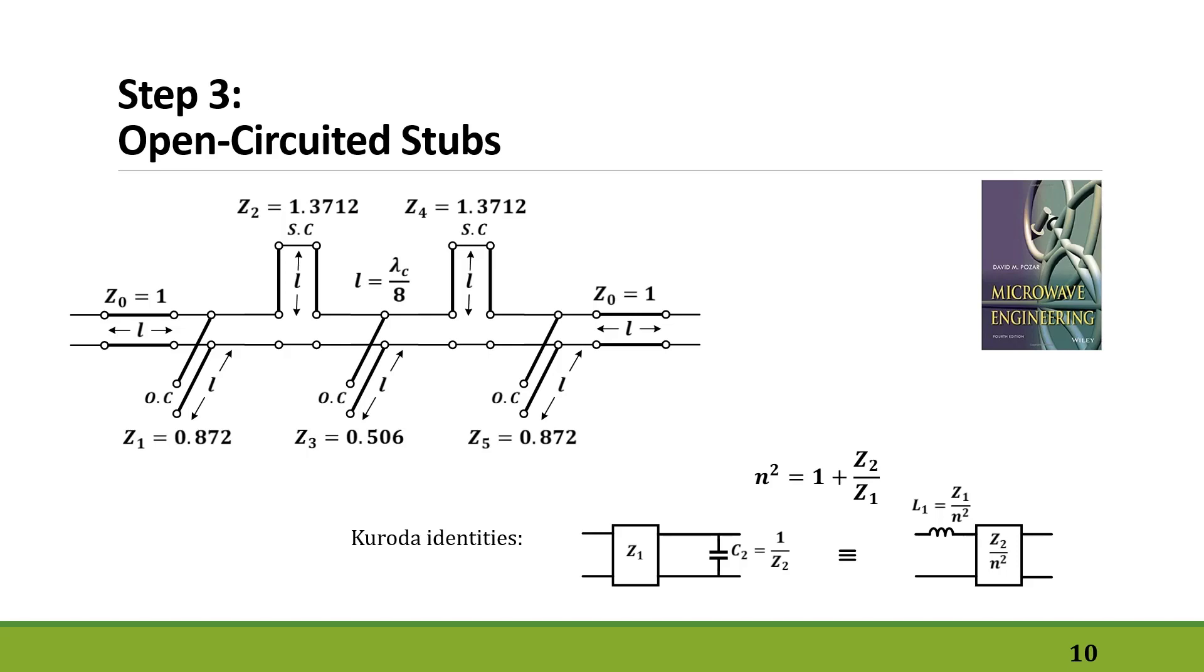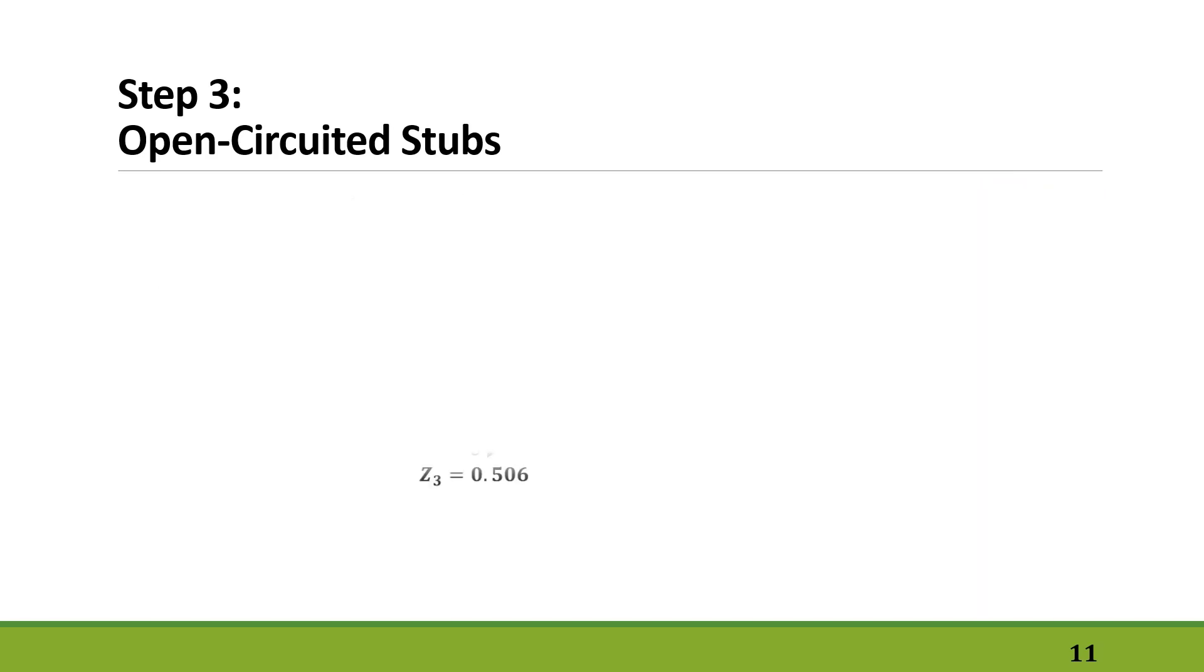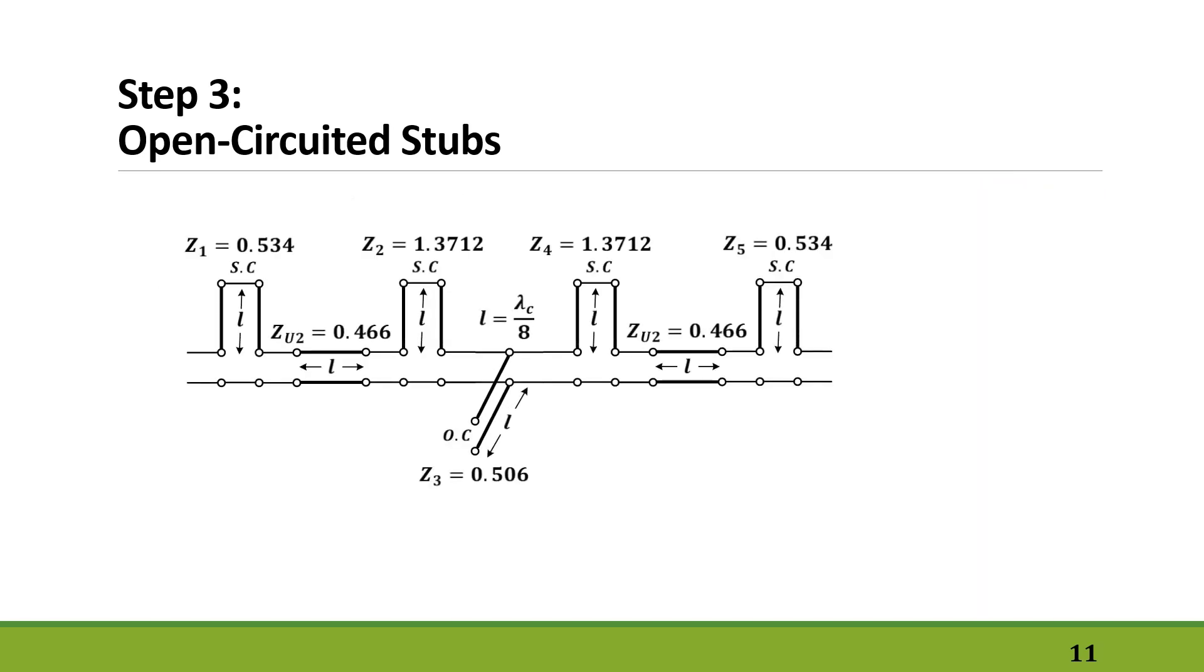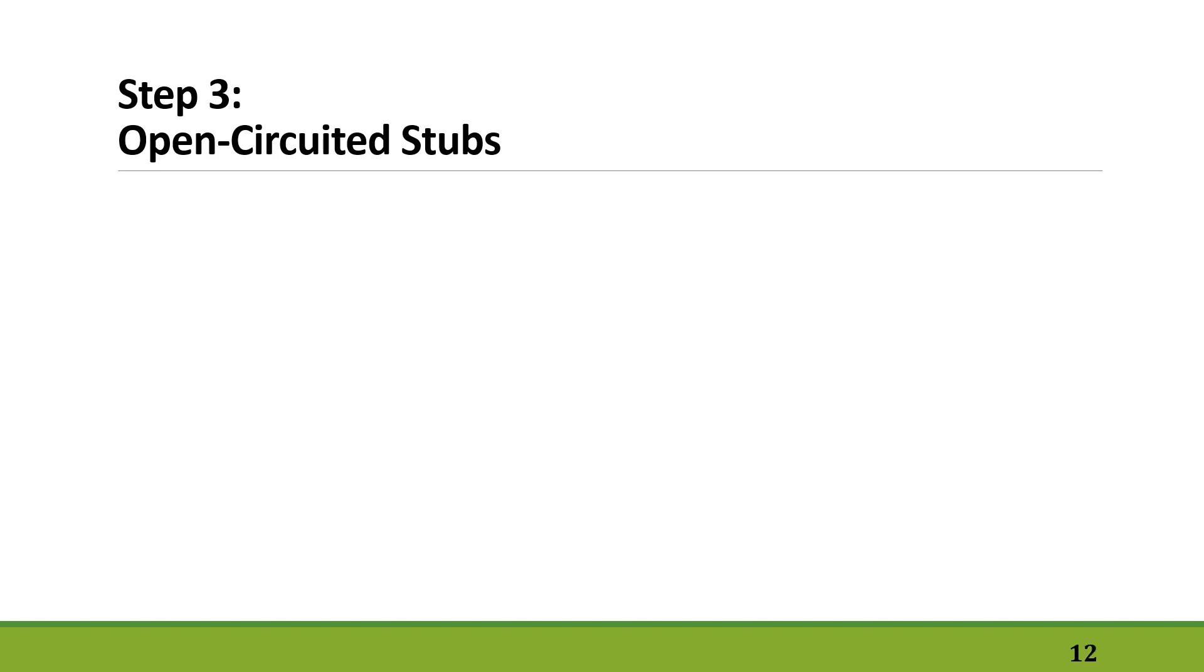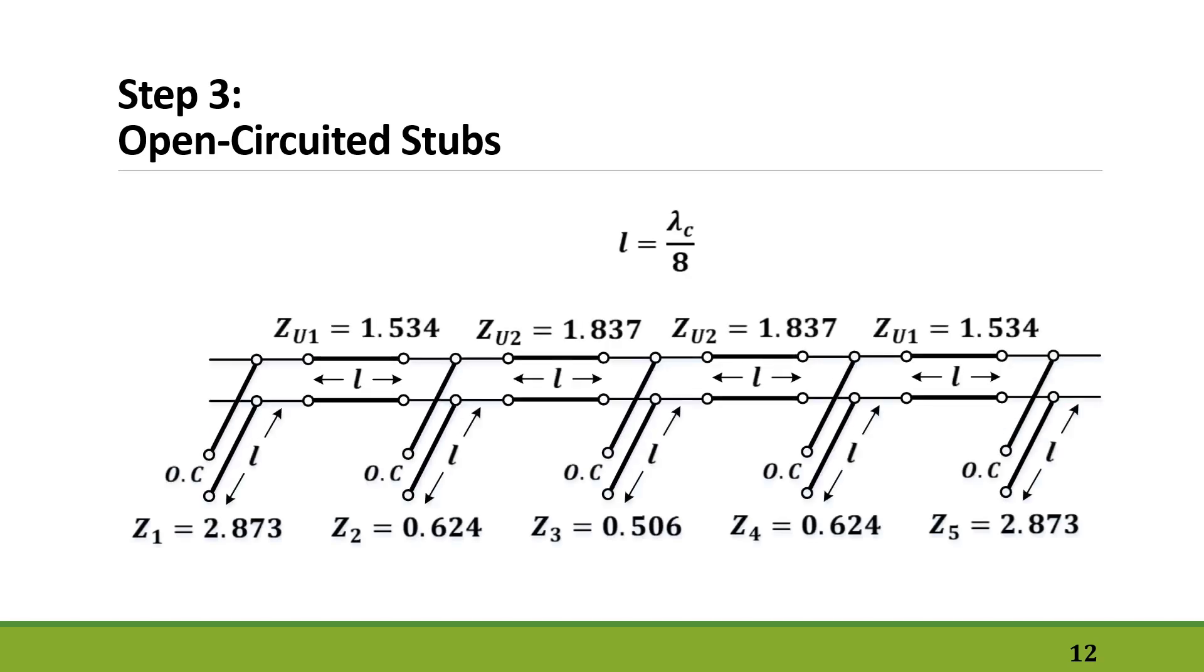Here we can simply add two 50-ohm lines with the length of lambda over 8 at both ends of the filter, which we know don't have an effect on the performance. Here's how it looks like when we turn the capacitors into inductors. We can simply see that now we have the unit elements that we needed before. Again, we can add two 50-ohm lines for the two new inductors. This is how our filter looks like after we have swapped every inductor of the circuit for a capacitor.